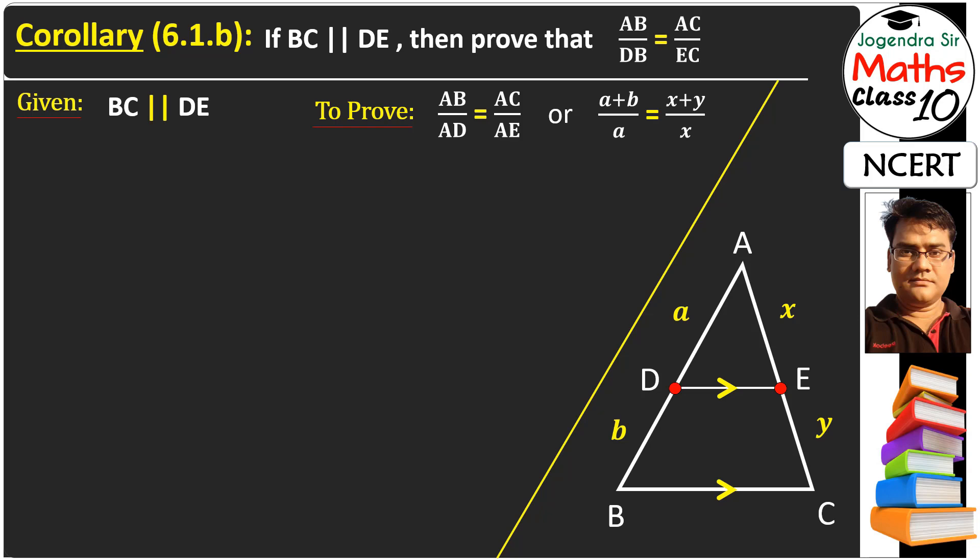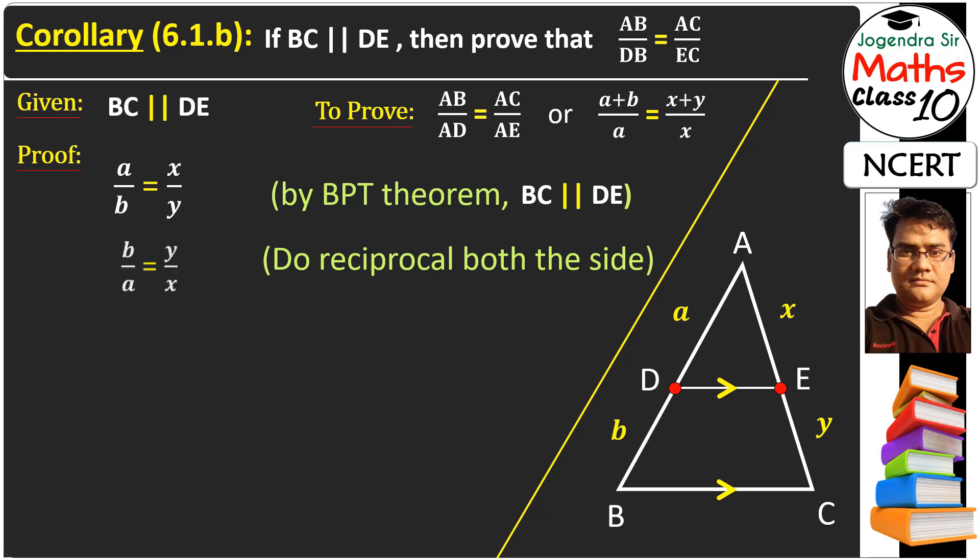Because the baseline is parallel in the triangle, by BPT theorem we have to say A upon B is equal to X upon Y. Now we have to choose A and X. So what we have to do is do the reciprocal on both sides.